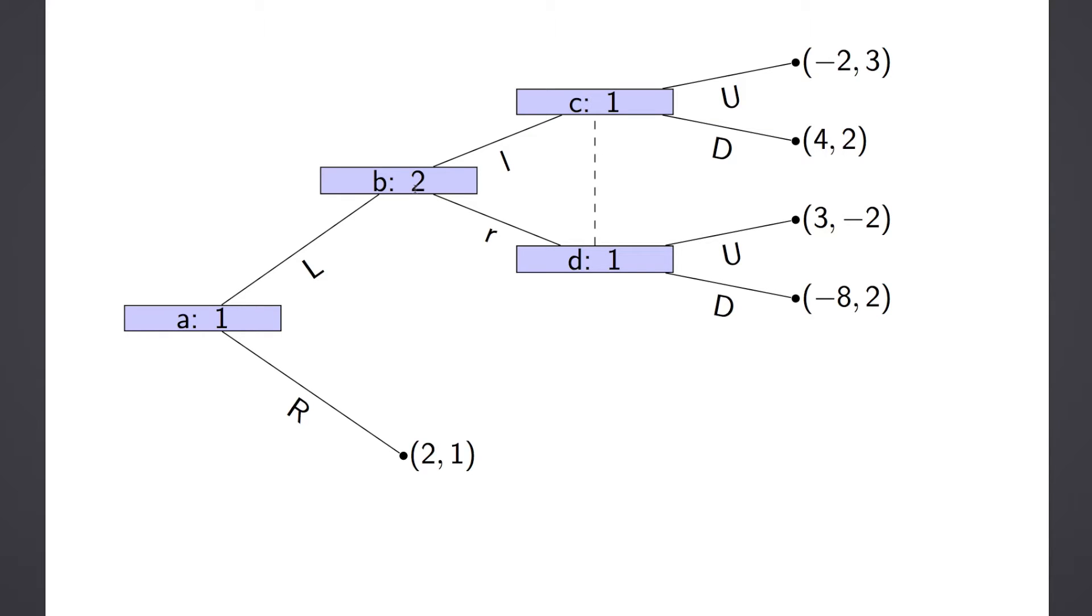Now, what's cool is that you can take an extensive form game and find a unique representation in terms of the ordering of strategies in normal form. So first things first, we have to get the strategies. And here they are.